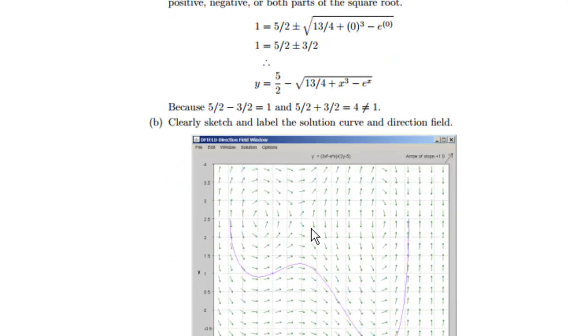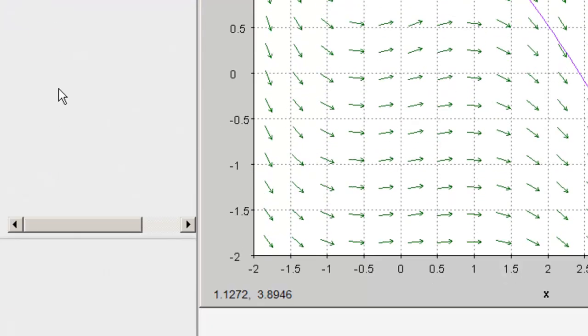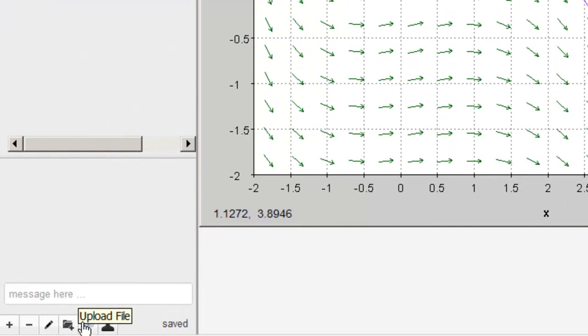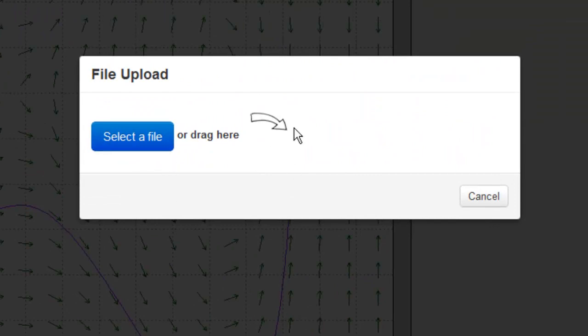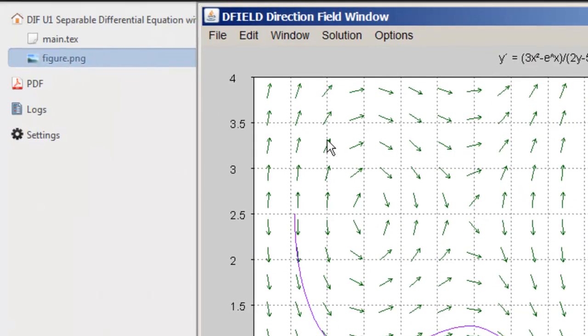Okay. And you may wonder, how did I include this image? First of all, I had to upload the image to my Share LaTeX folder. And I did that just by clicking down here where it says Upload File. I'll click Upload File. It'll say select a file or drag it. I've already done that with this, which I've saved as a .png image.